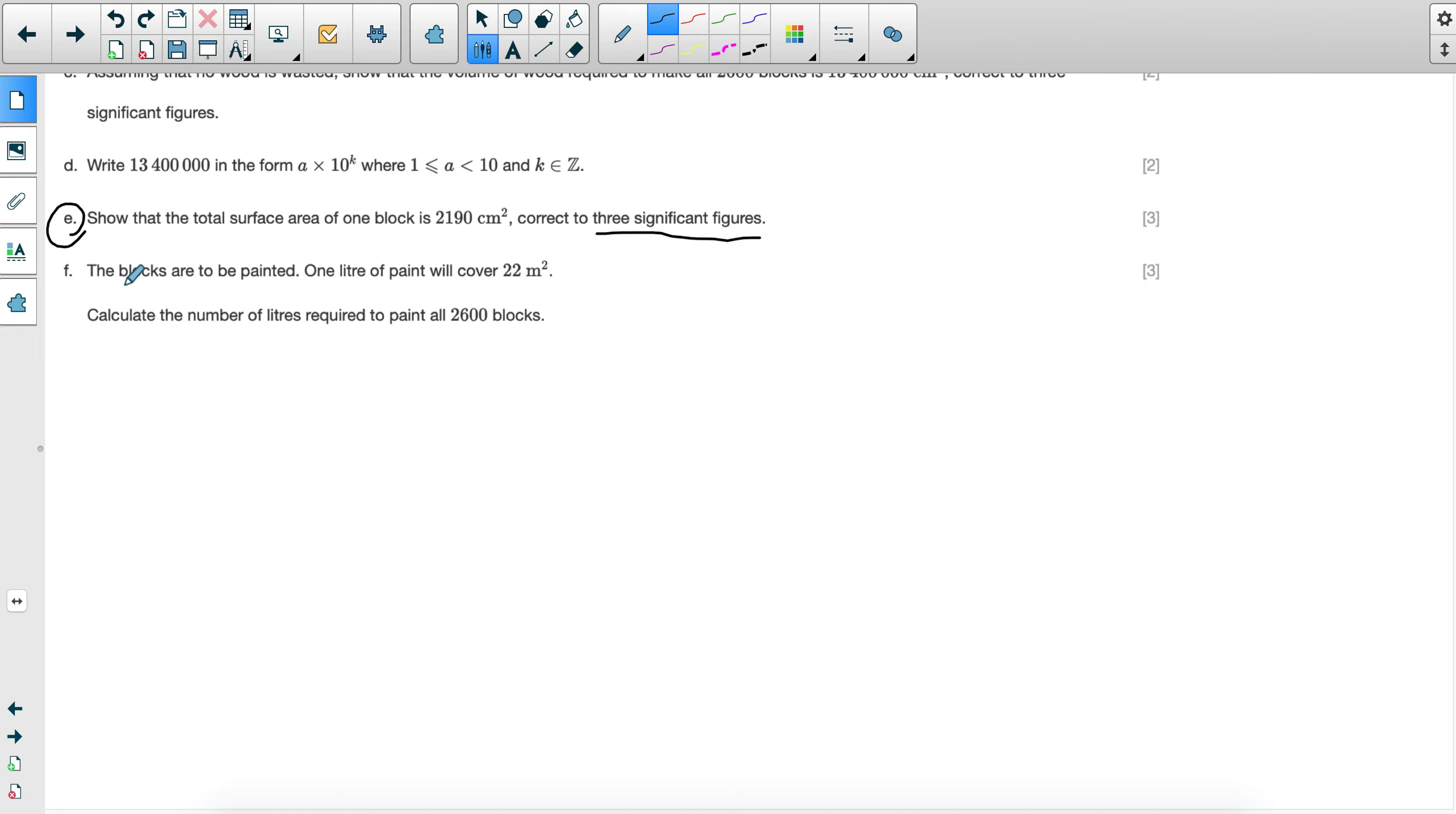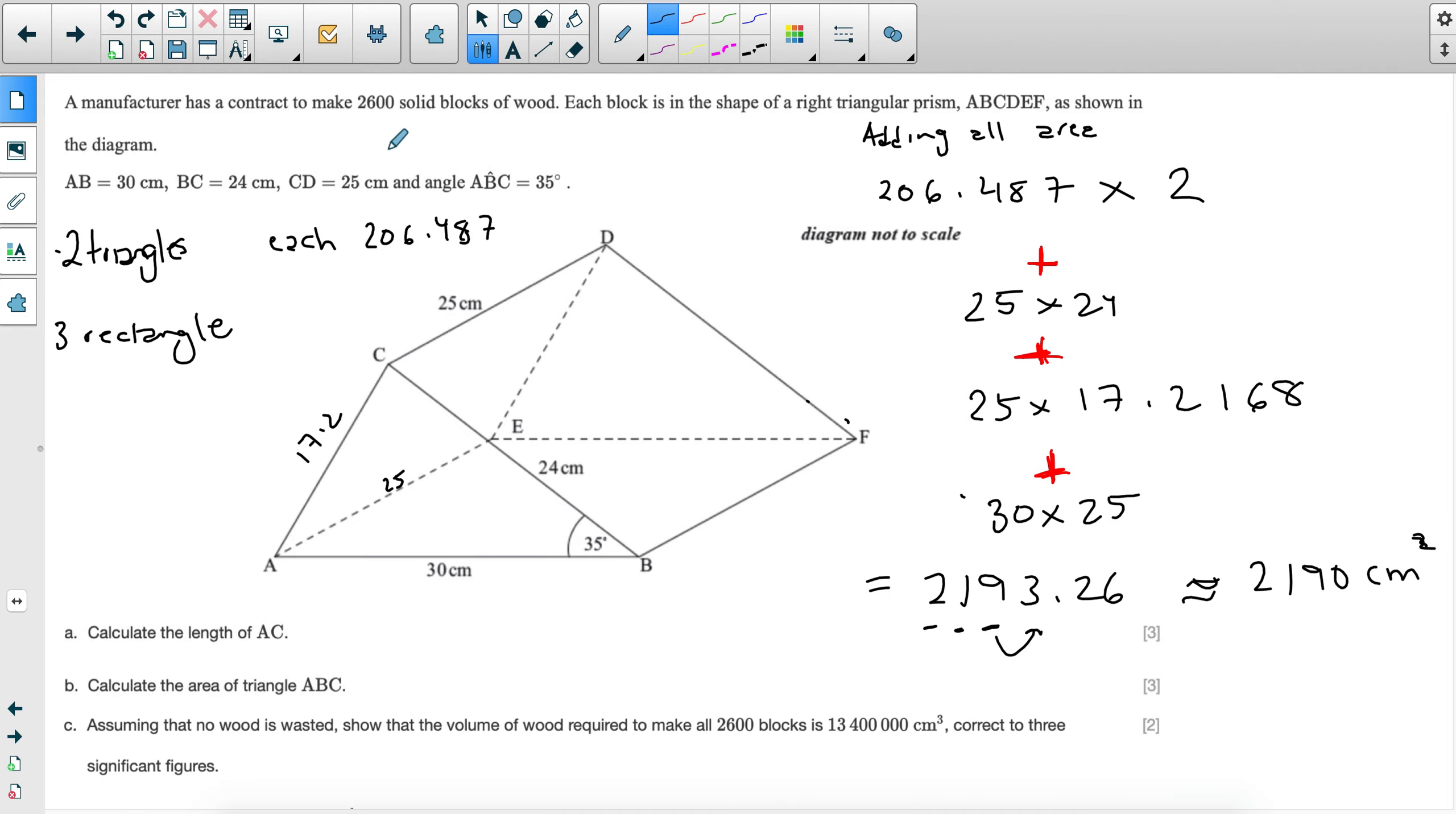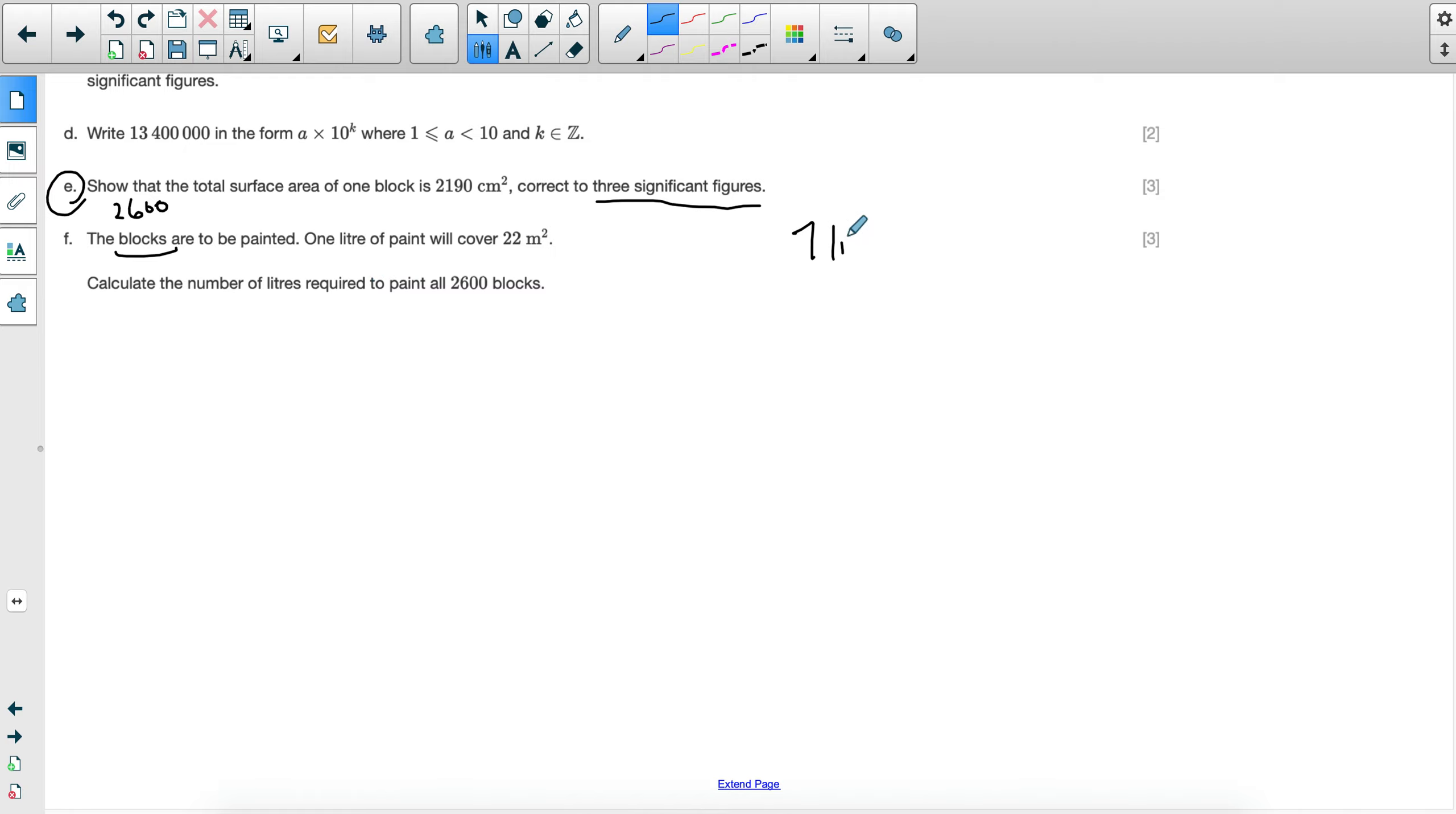So the blocks are to be painted. One liter of paint will cover 22 meters squared. So calculate the number of liters required to paint all 2,600 blocks. Well, to cover all of this, I need to know how much area am I covering. So if I know that the area of one is, let's take the rounded answer. So the surface area of one is 2,190. So the surface area of 2,600 of them will be just this multiplied by 2,600. So this will give me 5,694,000. So this is the surface area for all 2,600.